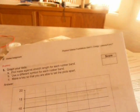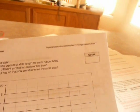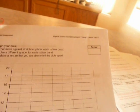All right, I'm going to fill out my data chart completely. And then it says to graph your data, plot mass against stretch length for each rubber band. Use a different symbol for each rubber band and make a key so you're able to tell the plots apart.